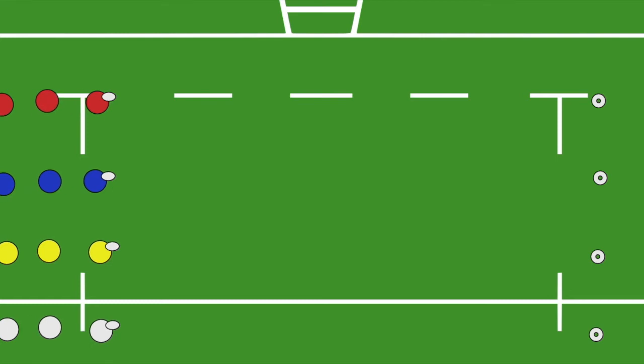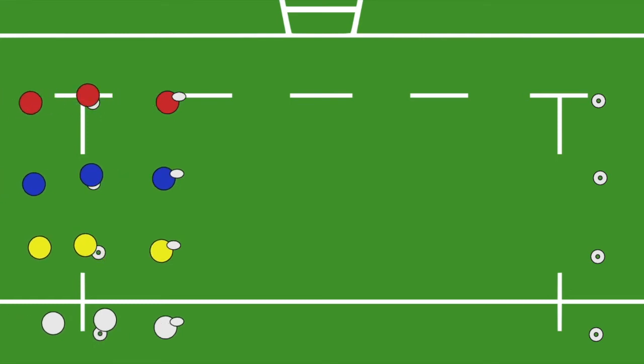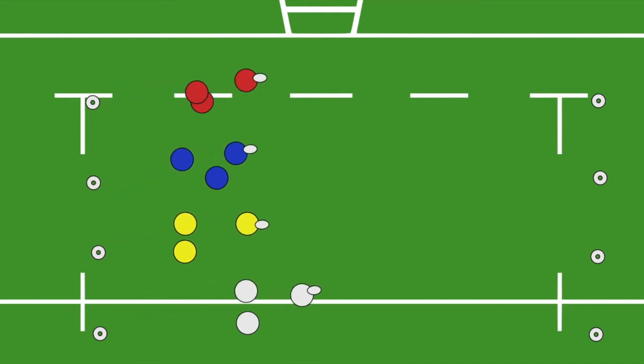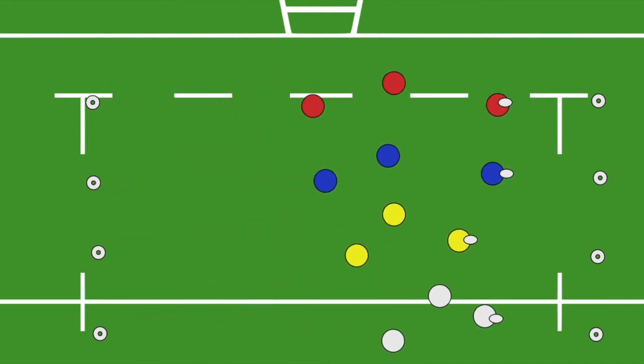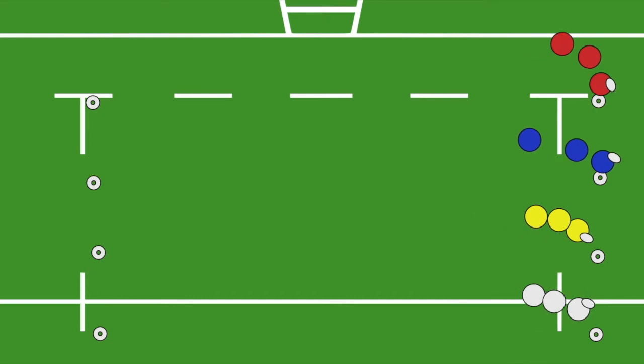Offload relay challenges players to race with their teammates while working on their offloading skills. The players with the ball will fall knee, hip, shoulder while holding the ball in two hands and popping the ball up in the air.